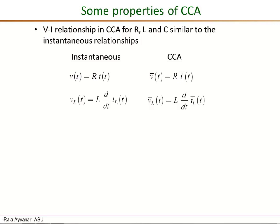That comes from the basic definition. For an inductor instantaneously, VL of t is L d/dt of IL of t. Similarly, the cycle by cycle average voltage, VL average, is also L d/dt of the average inductor current, CCA inductor current.